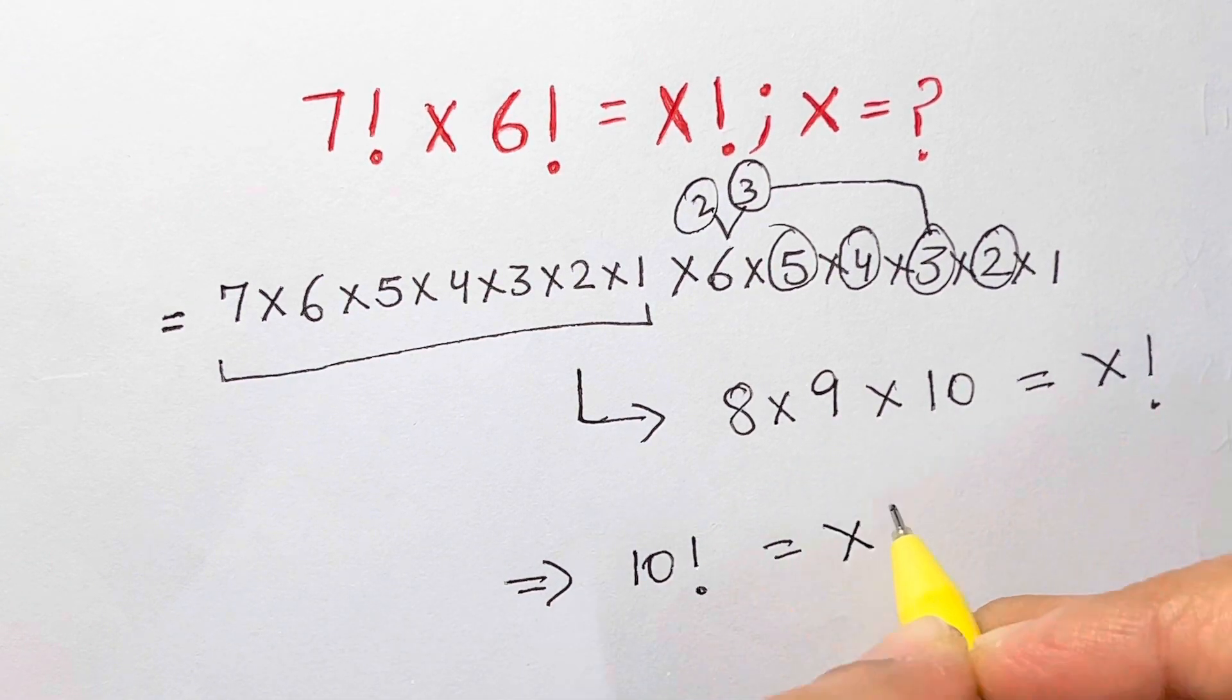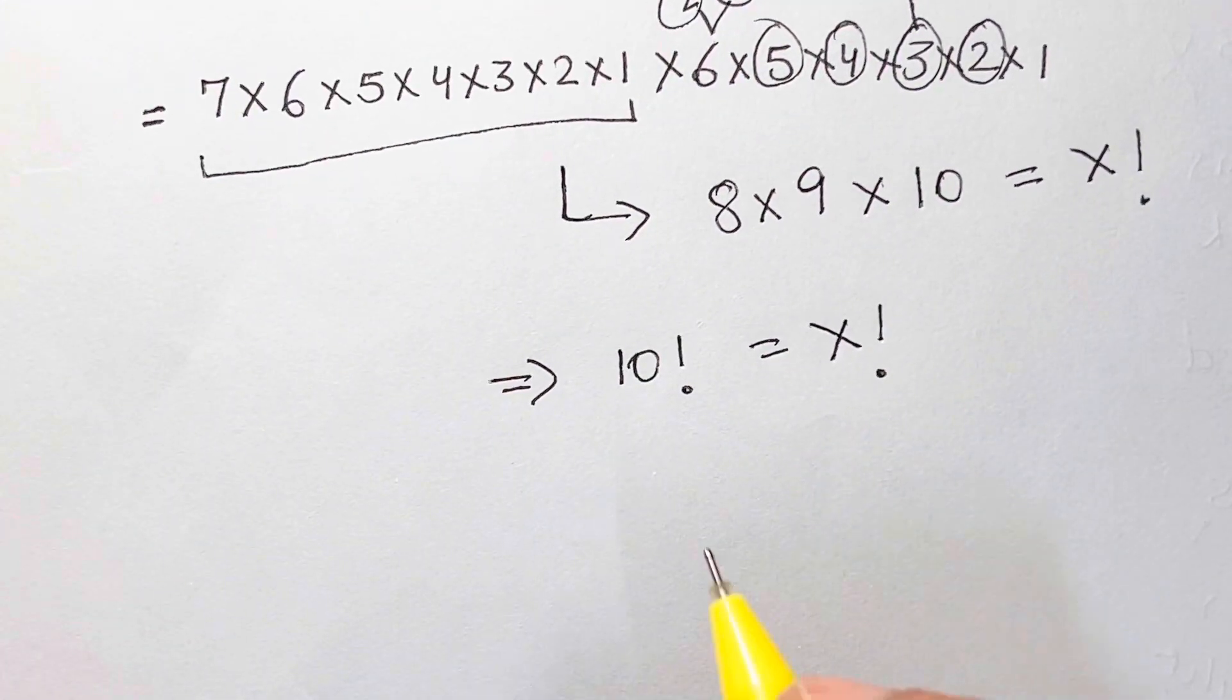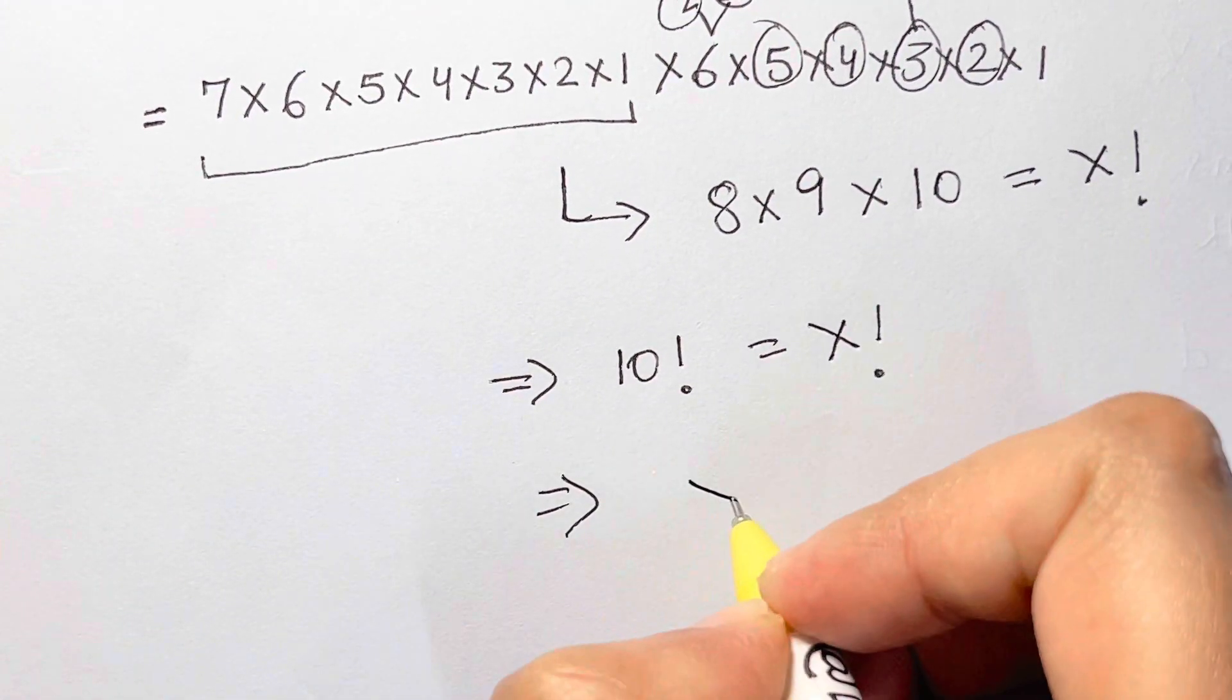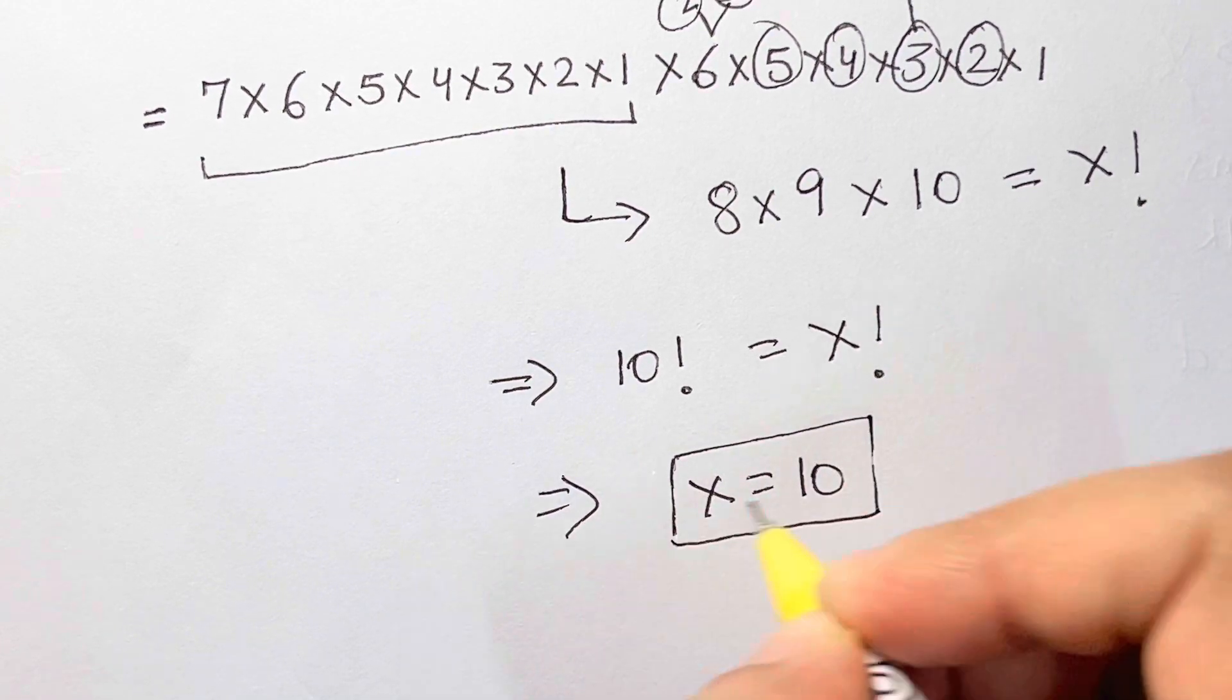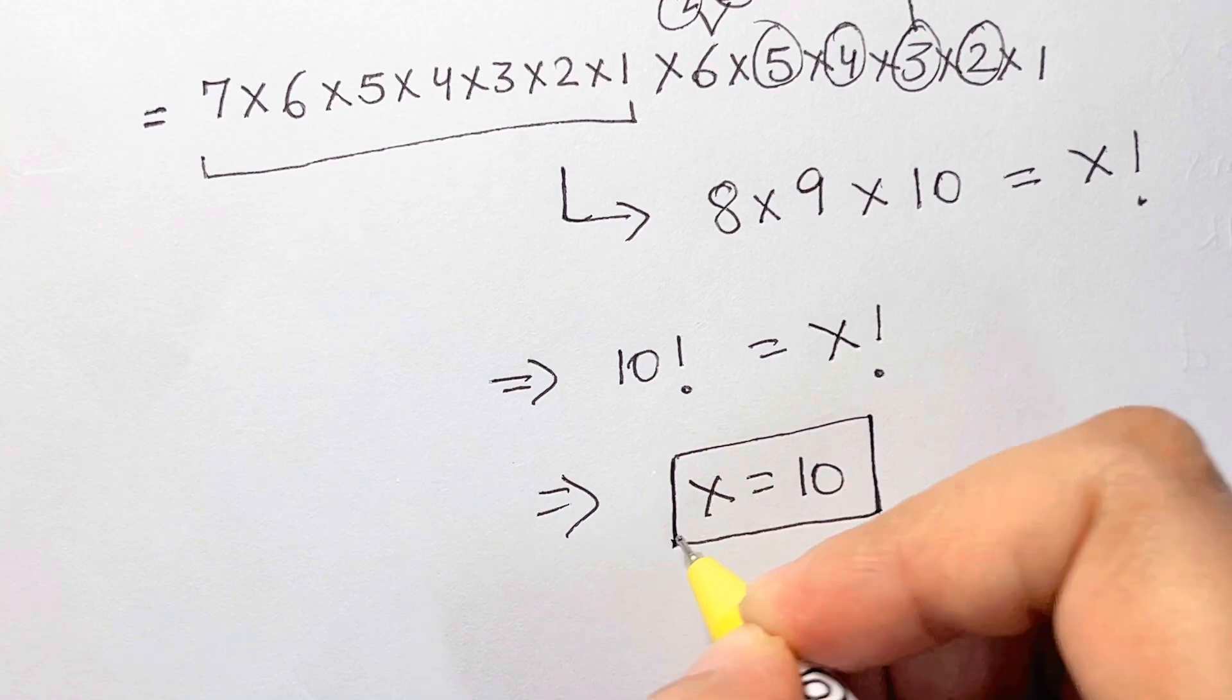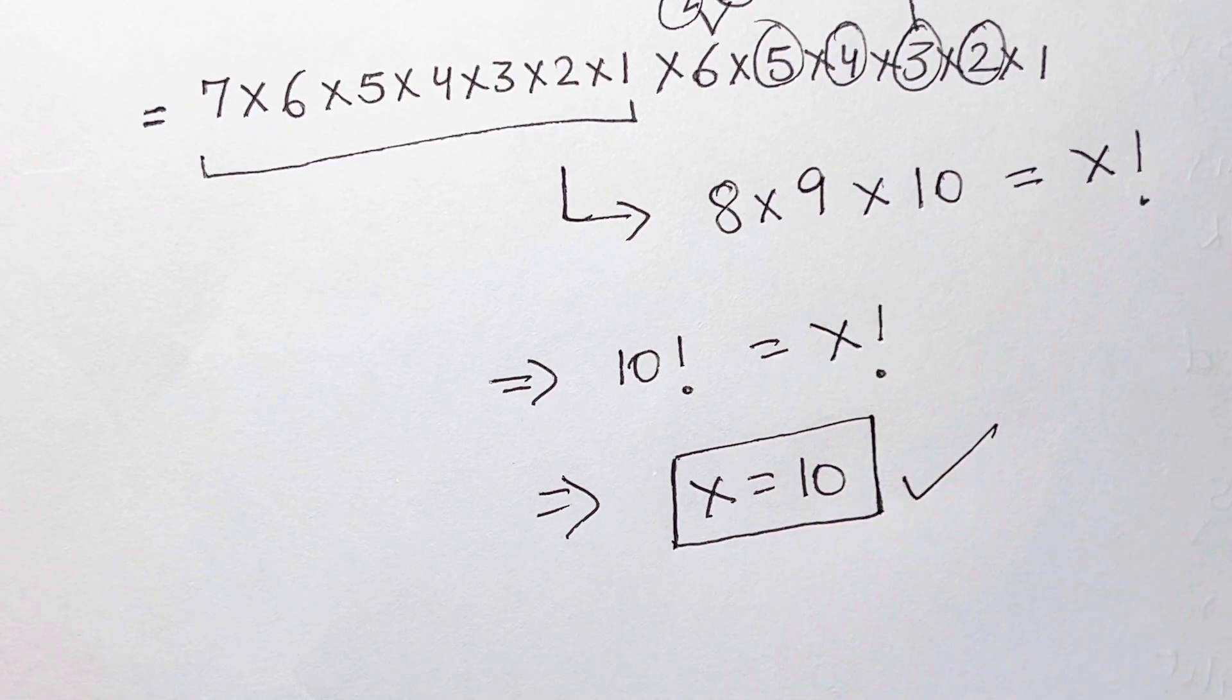to x factorial. So what's the value of x? We have got x is equal to 10—that's our answer. How simple are factorials! Thank you so much, bye bye, take care, have fun!